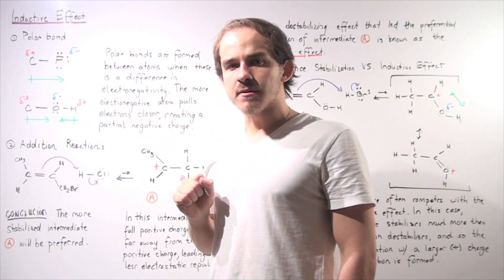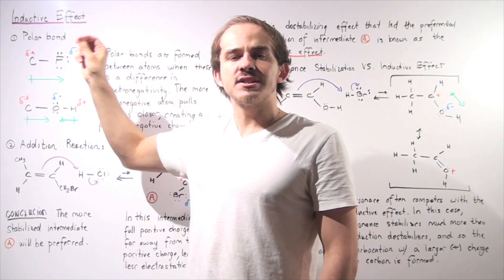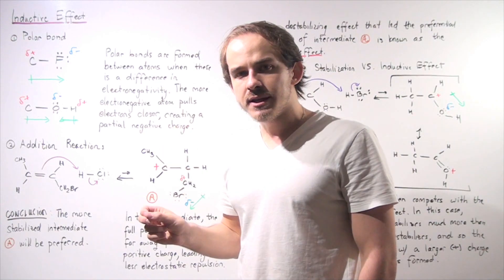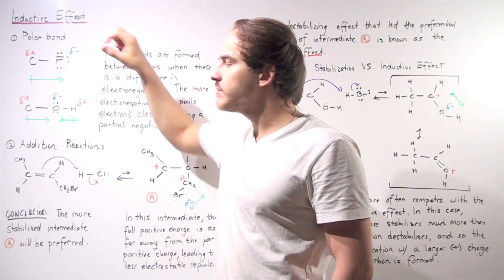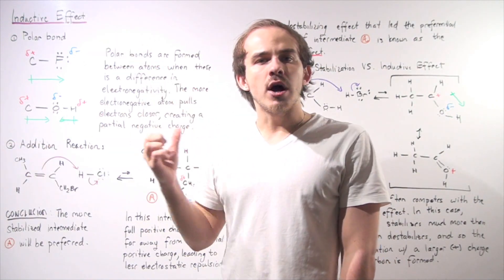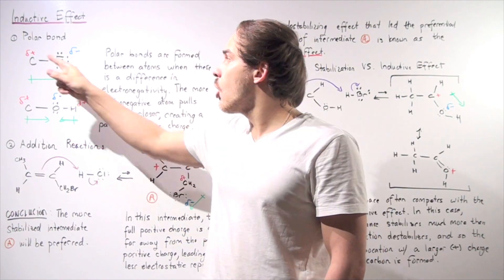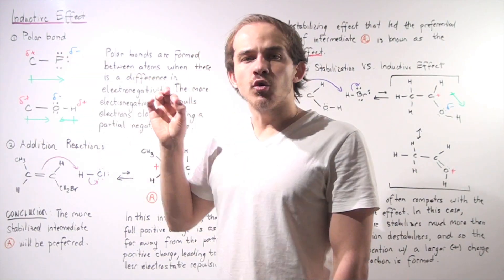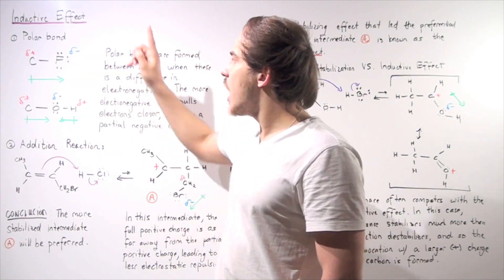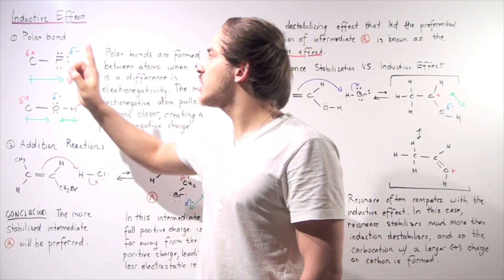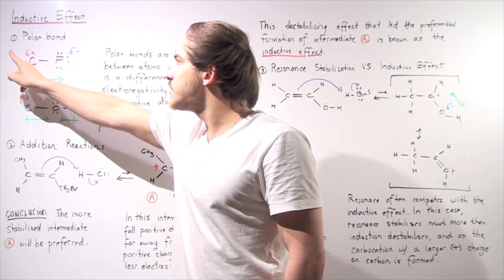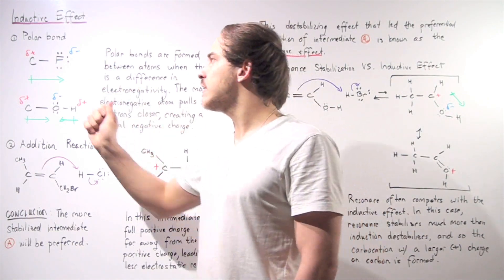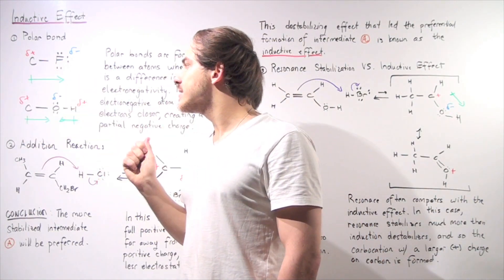Consider the carbon-fluorine bond. Fluorine is the most electronegative atom, and it's more electronegative than carbon. That means the protons in the nucleus of the fluorine will pull electrons strongly — more strongly than carbon — shifting electron density towards the fluorine, creating a partial negative charge on the fluorine and a partial positive charge on the carbon. This difference in partial charges creates a dipole moment pointing from plus to minus.